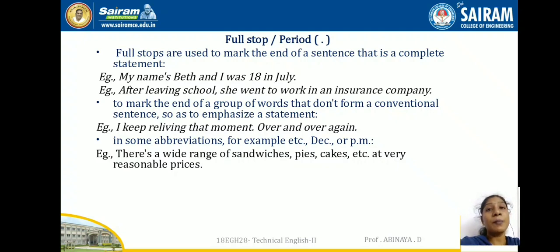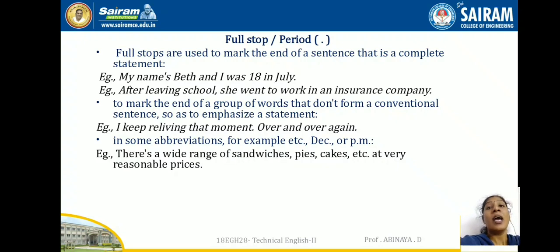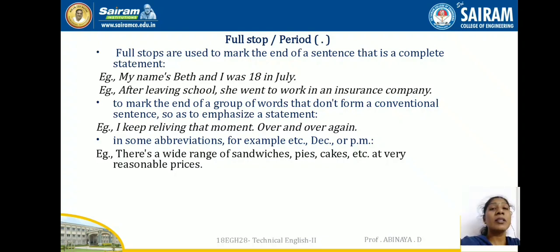The third usage is in abbreviations. Whenever you are shortening a word, you use a full stop. For example: 'There's a wide range of sandwiches, spices, cakes, etc.' We shorten 'etcetera' as 'etc.' and use a full stop. Most of the time we use abbreviations with full stops.